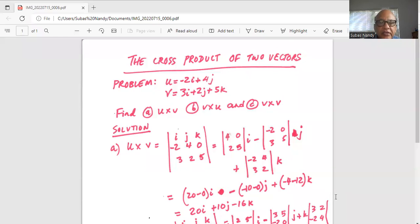The cross product of two vectors. Problem is u is a vector -2i + 4j, v is another vector 3i + 2j + 5k. First part we have to find u cross v, second part v cross u, and the third part v cross v.